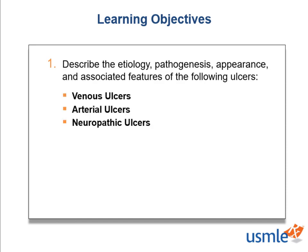Today, we have one objective that applies to all three kinds of ulcers: to describe the etiology, pathogenesis, appearance, and associated features of venous, arterial, and neuropathic ulcers.